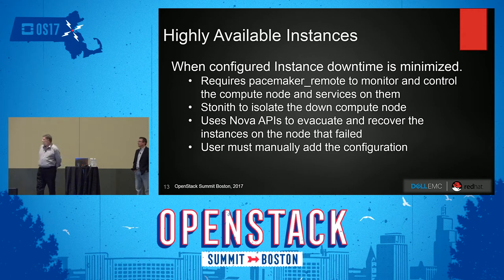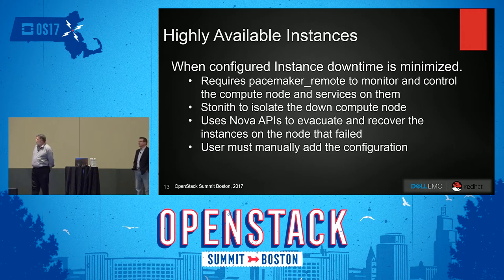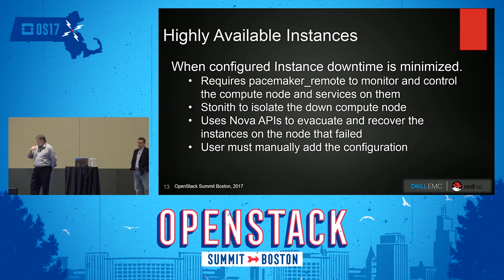When the high availability instance cluster is configured correctly, it requires pacemaker remote on the compute nodes. Pacemaker needs to be able to talk to the compute nodes — it's running on a controller node and talks to the compute nodes to monitor and control their services. It uses stonith to isolate the nodes. If there is a failure, it uses stonith to isolate the compute node and then uses Nova APIs to evacuate and recover the instances on that node.